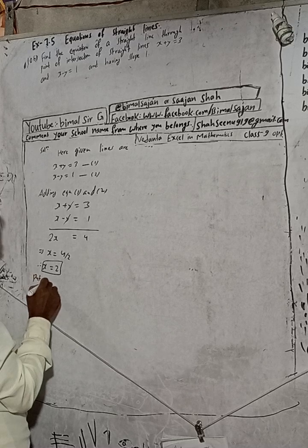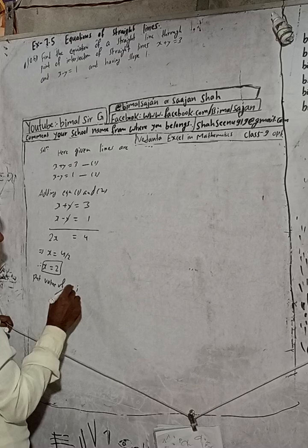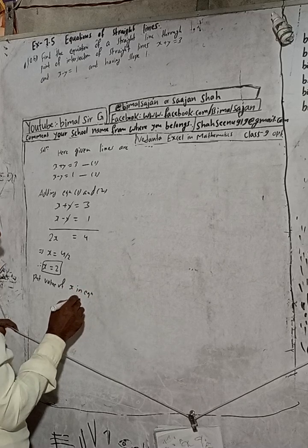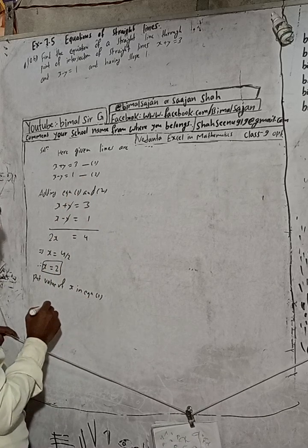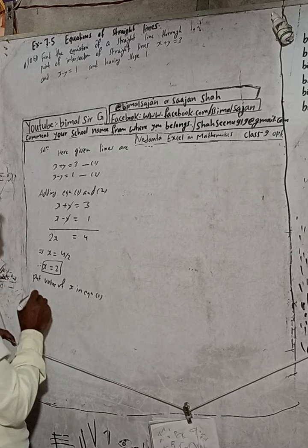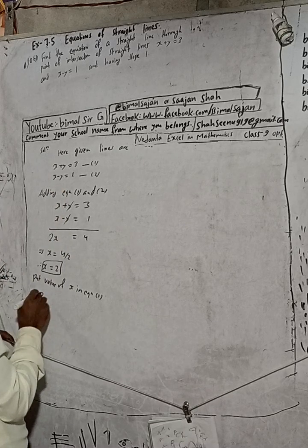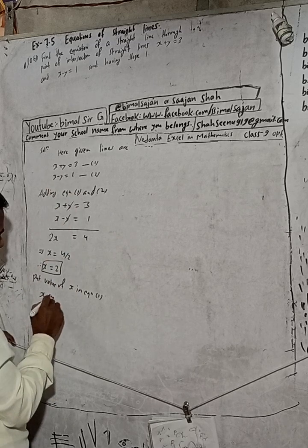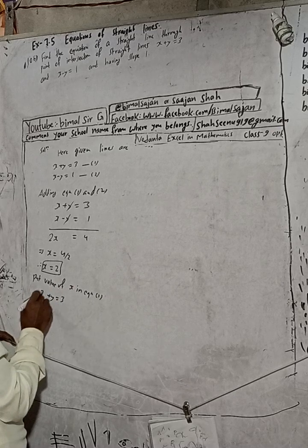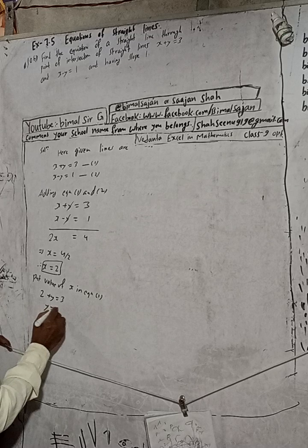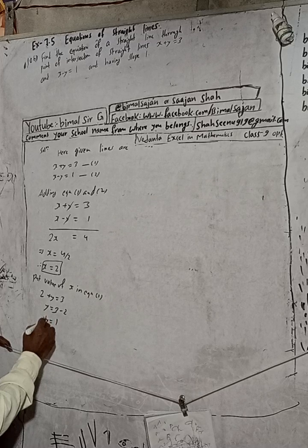Now put the value of x into equation 1. Substituting x equals 2 into x plus y equals 3, we get 2 plus y equals 3, so y equals 3 minus 2. Therefore y equals 1.